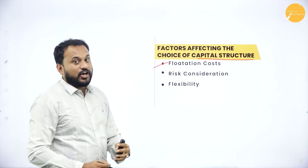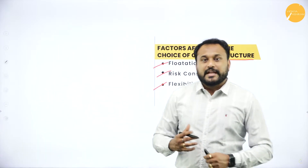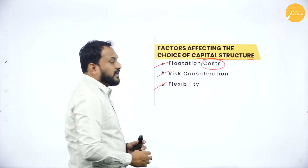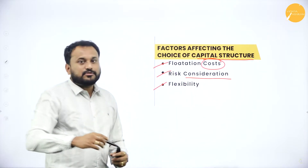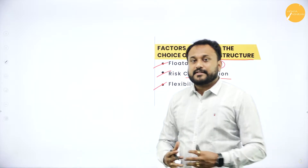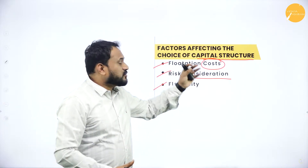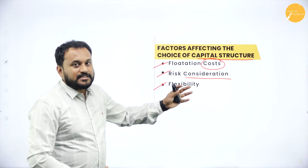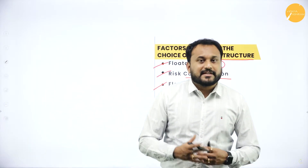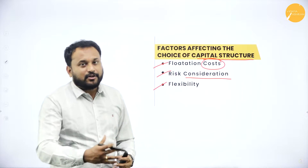Now here we have flotation cost, risk consideration, and flexibility. Flotation cost is about the cost which is incurred. Risk consideration — you are supposed to always consider that in a business there will be risk and you are supposed to prepare for all the risk. When you are preparing yourself for the risk, you are supposed to allocate the finance for the risk itself. Now when you have more debts, the risk rate is too much because you are supposed to pay more interest to whatever you have taken from the bank or financial institution.